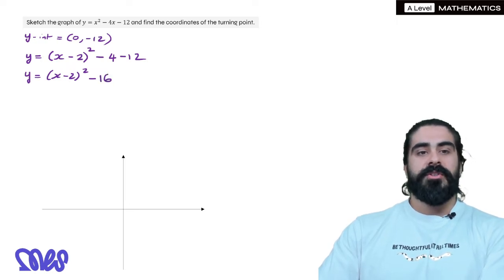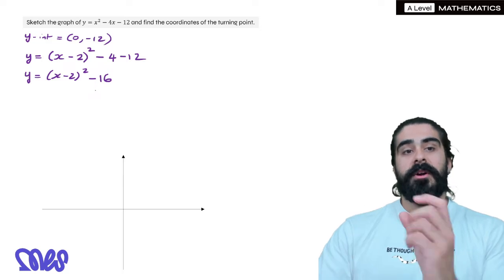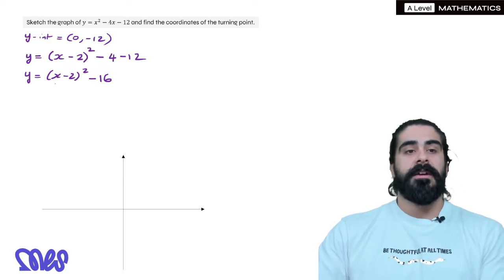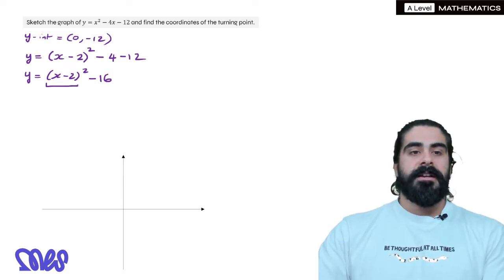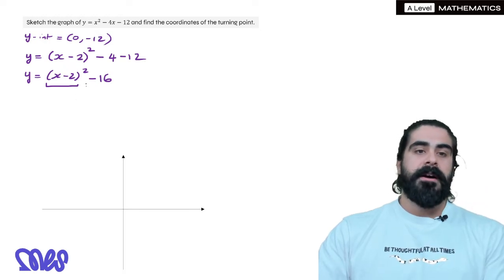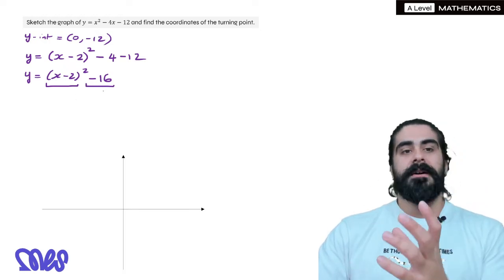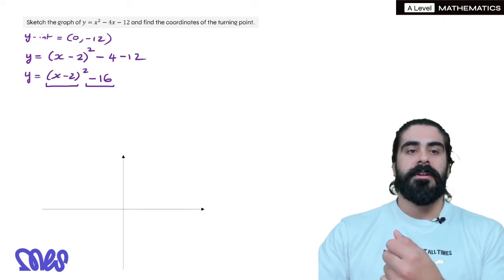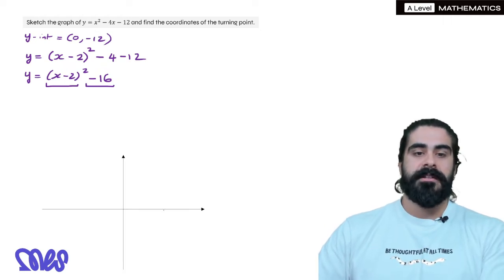So our turning point is at 2, minus 16. Now remember what it's doing to the x squared graph. So the x minus 2 will shift it to the right by 2, and the minus 16 brings it down by 16, which is why the turning point is at 2, minus 16.